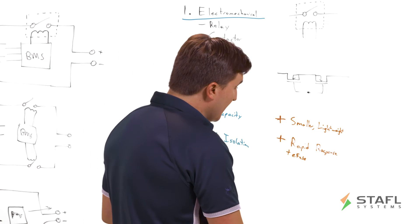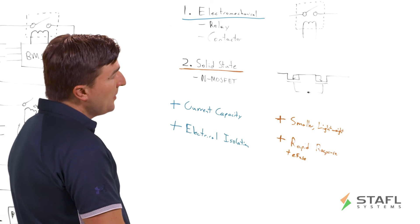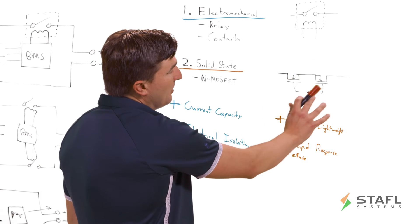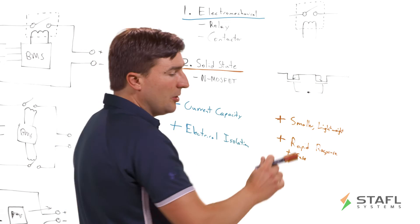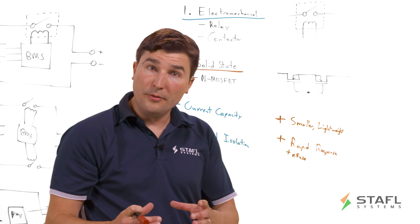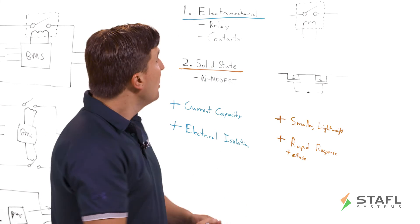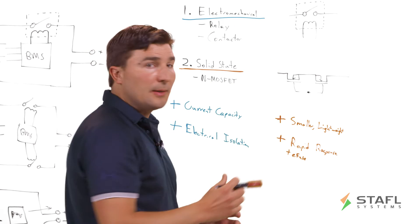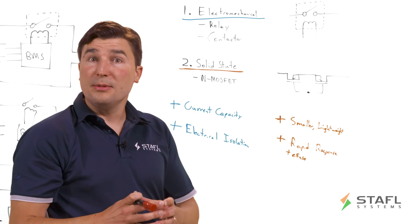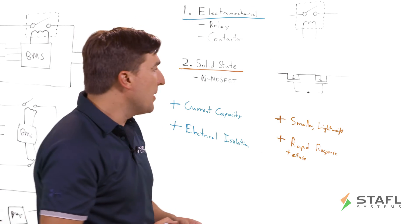One of the other things to think about is the form factor is much more flexible with a solid state switch. You can put it on the BMS board itself or make it flat on a separate board somewhere else. Whereas the electromechanical relay is typically a larger cylinder that needs to be physically placed and mounted within the battery pack.